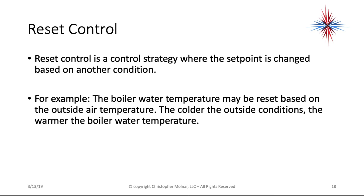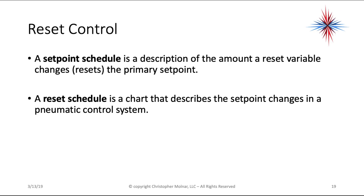Reset control is a control strategy where the set point is changed based on another condition. For example, boiler water temperature may be reset based on outdoor air temperature — the colder the outside, the warmer the boiler water. This can also be done with chilled water systems: if the temperature outside is cooler, less cold water is needed, saving energy. A reset schedule is a chart describing set point changes, commonly used in pneumatic (air-based) control systems.